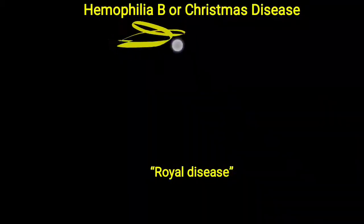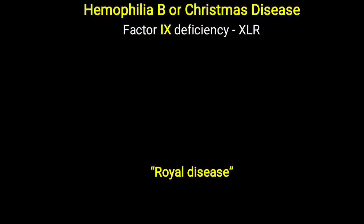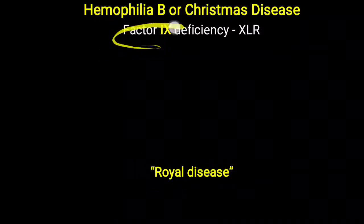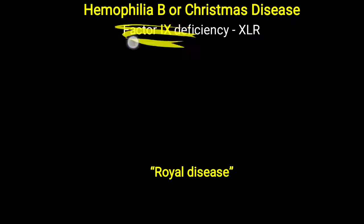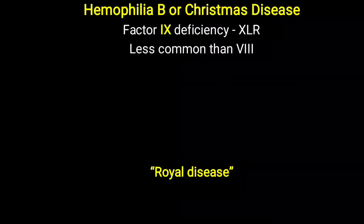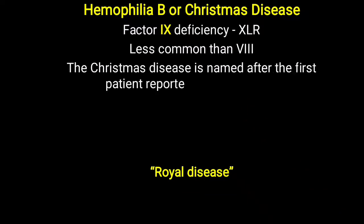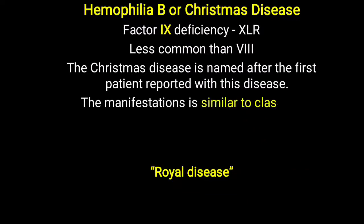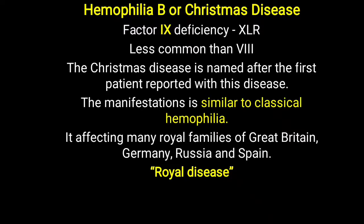Moving on to Haemophilia B — remember it is also called Christmas disease as well as Royal disease. Haemophilia B is not the same as Haemophilia A; in Haemophilia B, factor IX is deficient rather than factor VIII, though it is also an X-linked recessive condition with the same pattern of inheritance. It is less common than Haemophilia A. Christmas disease is named after the first patient reported with this disease. The manifestations are similar to classical Haemophilia A, and it is called Royal disease because it affected many Royal families of Great Britain, Germany, Russia, and Spain.